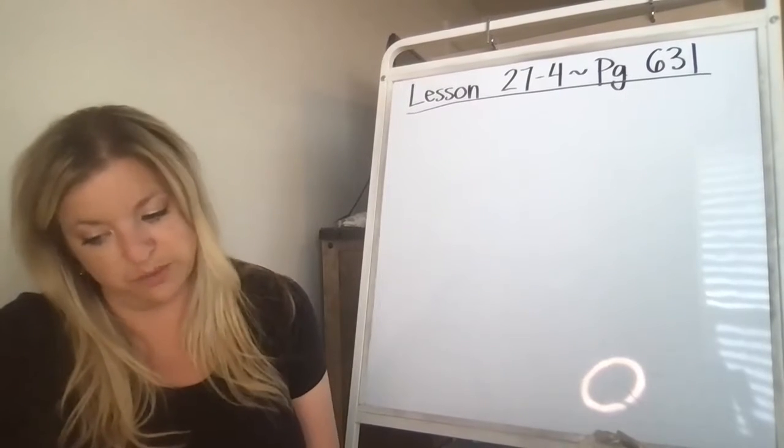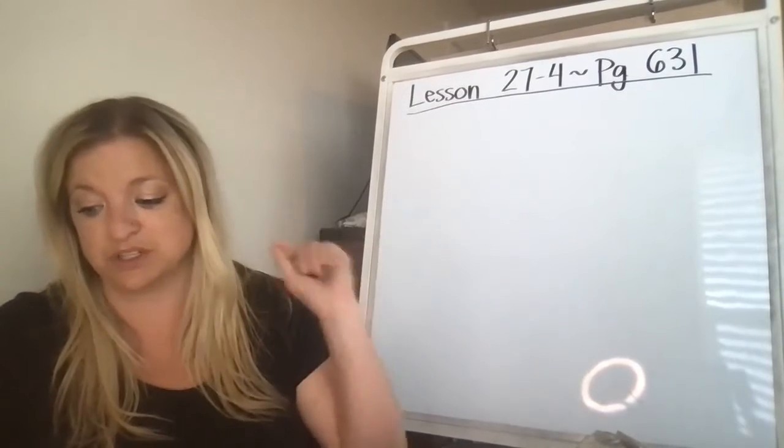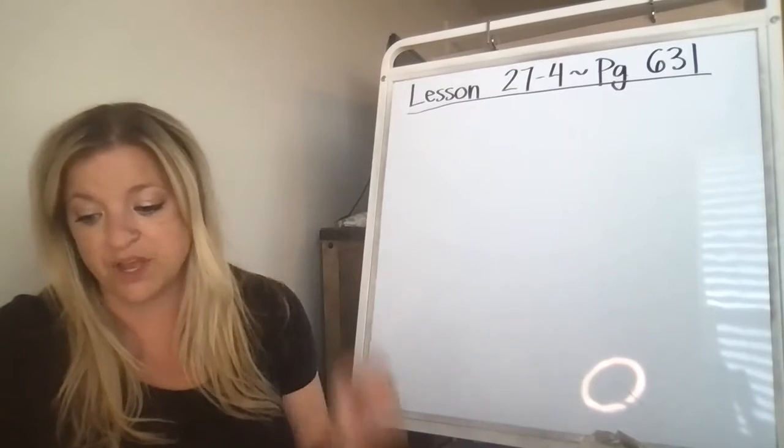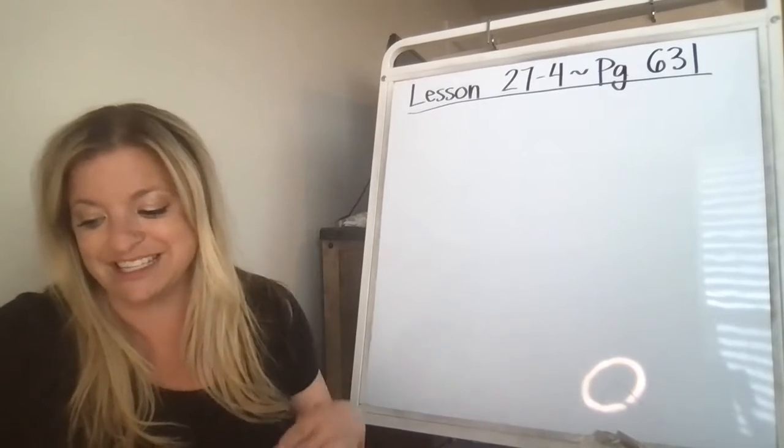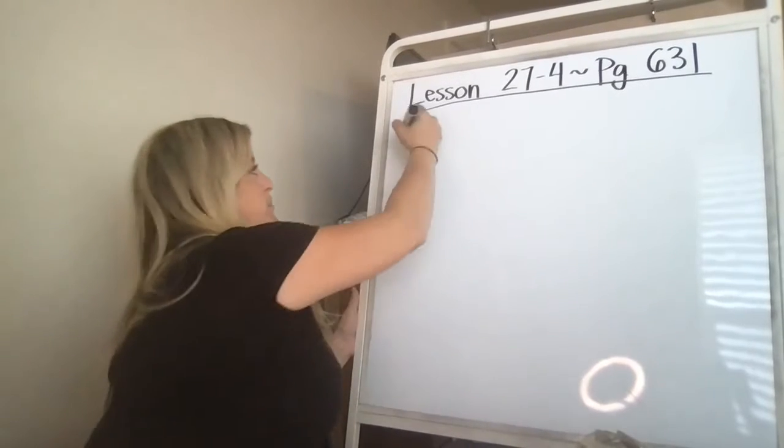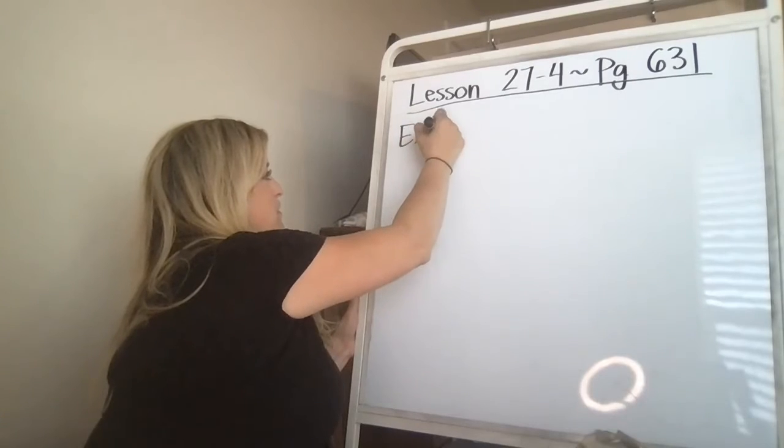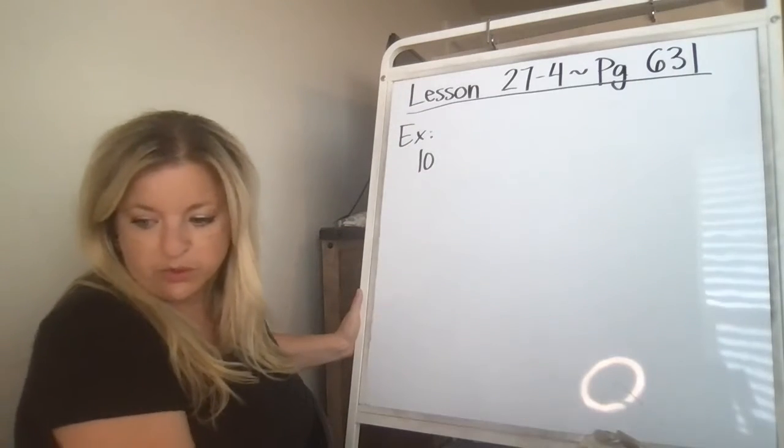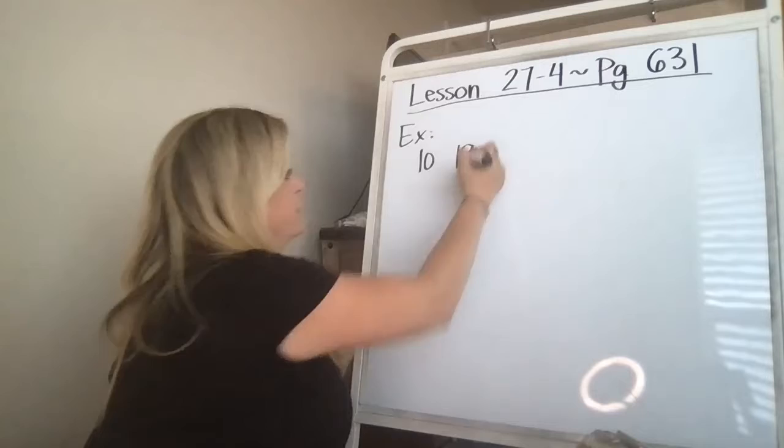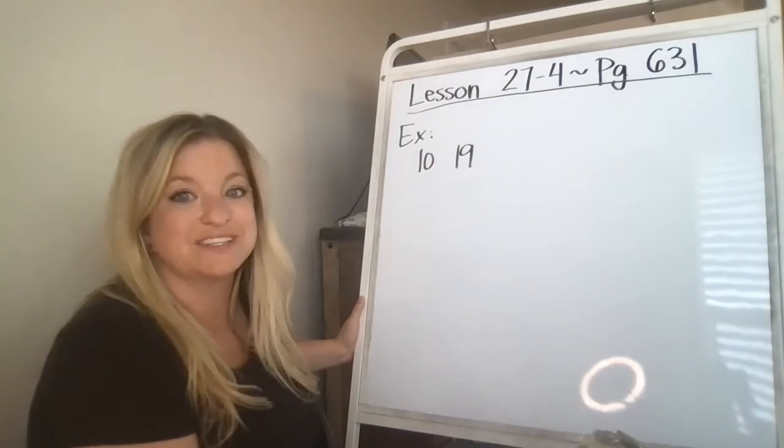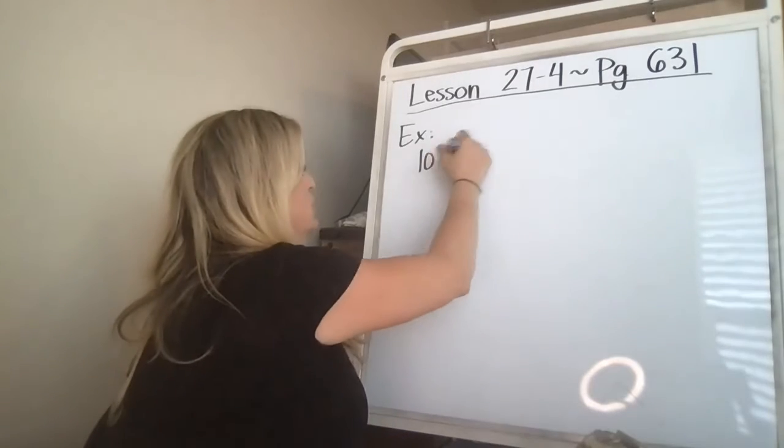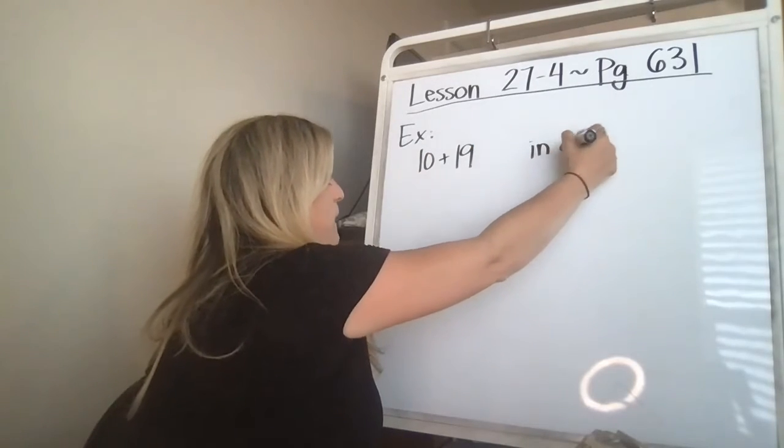On page 631 at the top it says complete the example then solve problems 1 through 4. 10 blue marbles and 19 green marbles. This is the example. 10 blue, 19 green, how many marbles in all? In all is your word clue that means we are adding.